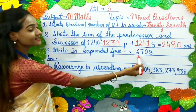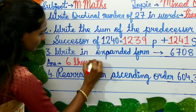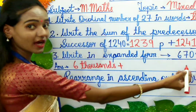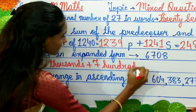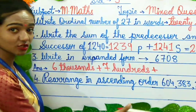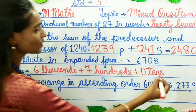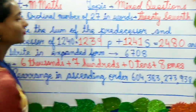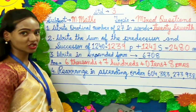To write in expanded form, we'll first see the place value. 6 is in the place of thousands, so we write 6 thousands. Plus 7 is in the place of hundreds, so 7 hundreds. In the tens place there is a zero, so we write zero tens. And in the ones place we have 8, so plus 8 ones. So we have written 6708 in expanded form.